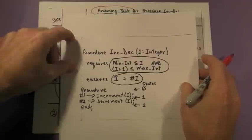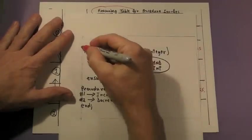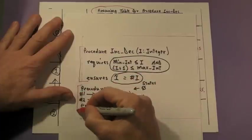First, let's review the operation that is at the heart of this reasoning table. The procedure header is here, and the procedure body is here.